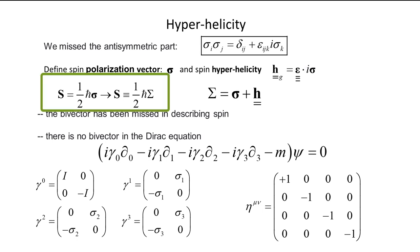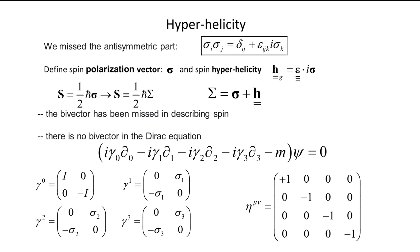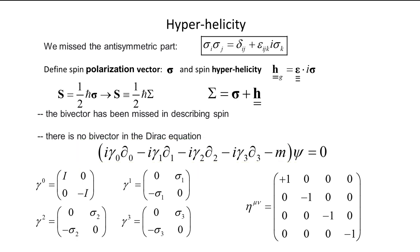Then the definition of spin changes from what we had before. The spin vector of one-half h-bar times sigma includes now the property of helicity as well as polarization. We call this quaternion or q-spin. Before discussion of q-spin, there is a problem that the Dirac equation does not display a bivector. To include it, I change one of the gamma matrices and this changes the signature or metric tensor.